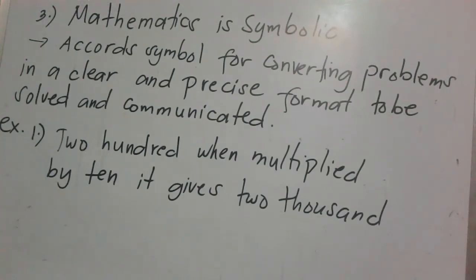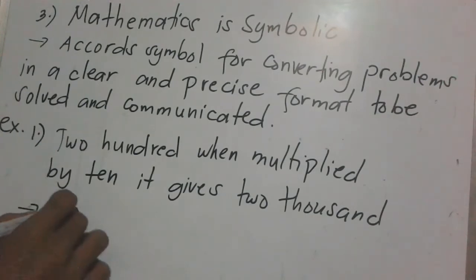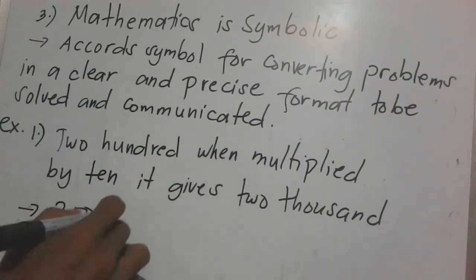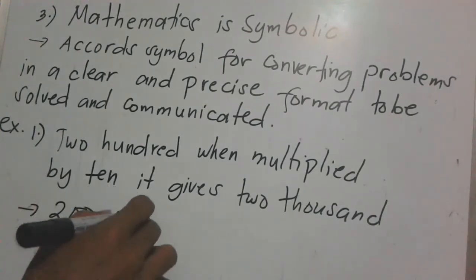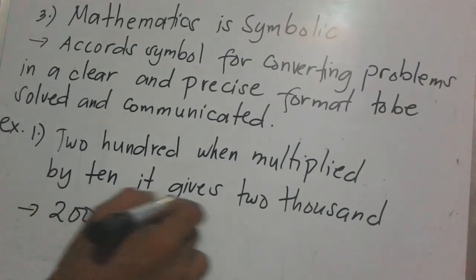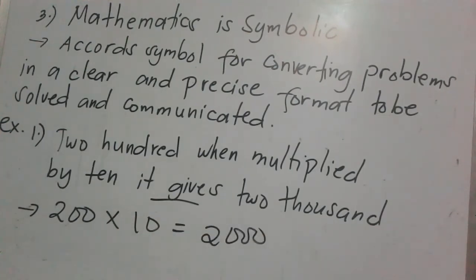Example 1: '200 when multiplied by 10 gives 2,000.' Converting to mathematical symbol: 200 × 10 = 2,000. That's how easy it is.